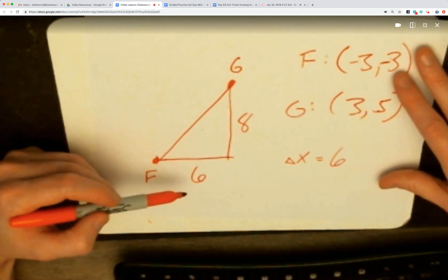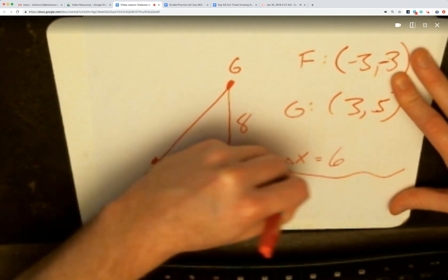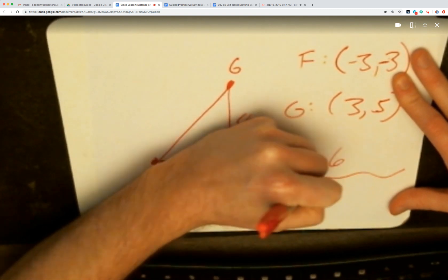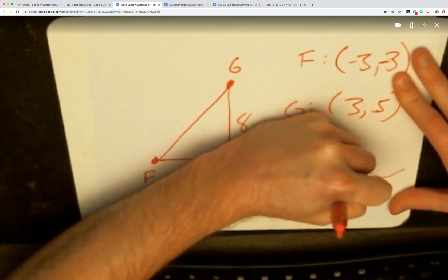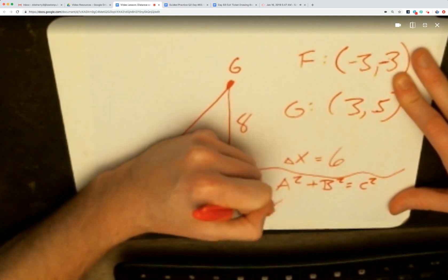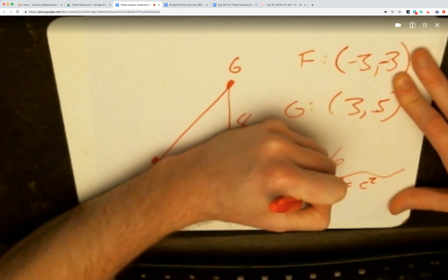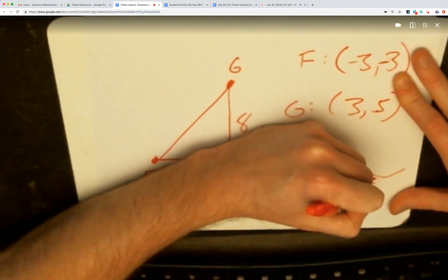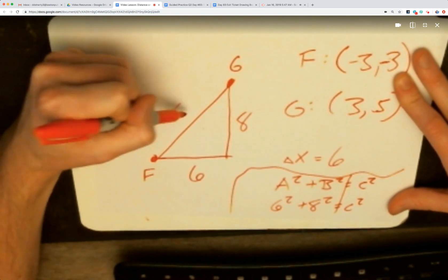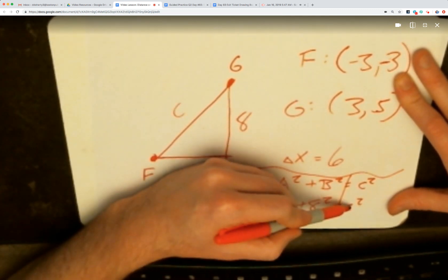I'm going to save some time on this video. You could go ahead and set up the Pythagorean theorem with a² + b² = c², plug in a 6, plug in an 8, and solve that equation where c is going to tell you the length of line segment FG.